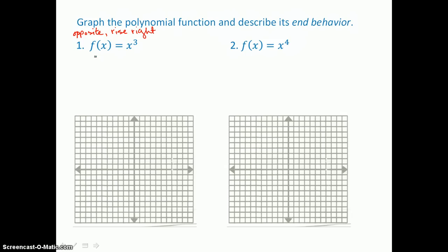So I'll make a table of values to find this curve on the coordinate plane. I'll let x equal negative 2, negative 1, 0, 1, and 2 — some values about the origin. If I cube negative 2, I get negative 8 for a y value. If I cube negative 1, I get negative 1. 0 cubed is 0, 1 cubed is 1, and 2 cubed is 8.